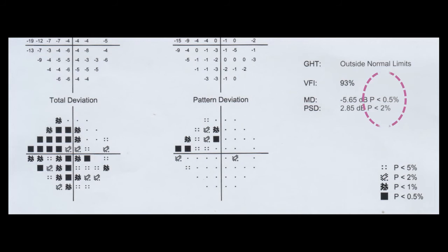Again here, mean deviation, it is minus 5.6 with probability less than half. So less than half percent of the normal population can show this value. For the standard deviation 2.85, this value has a probability of 2, less than 2% of the normal population can show such a value.